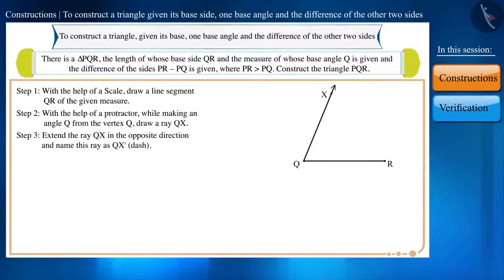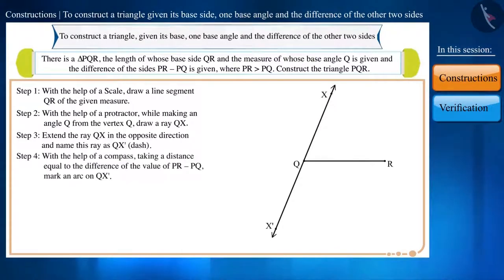Step 3. We will now extend QX in the opposite direction and name this ray as QX dash. Step 4. With the help of a compass, taking a distance equal to the difference of the value of PR-PQ, mark an arc on QX dash.